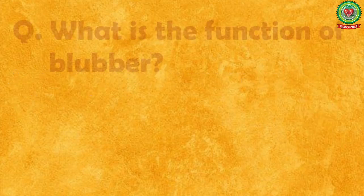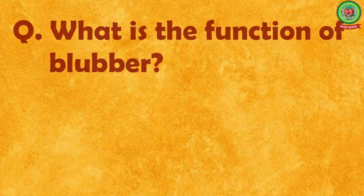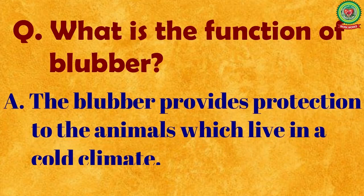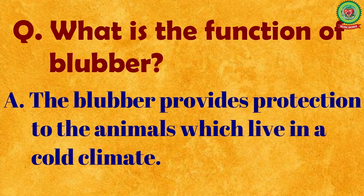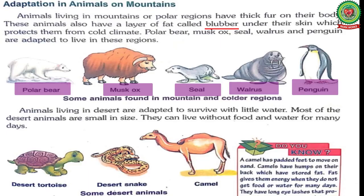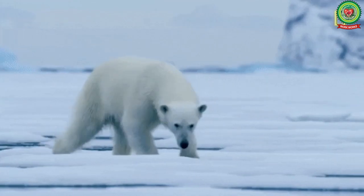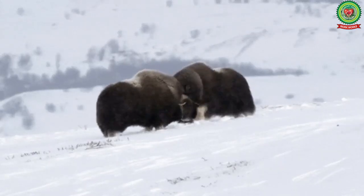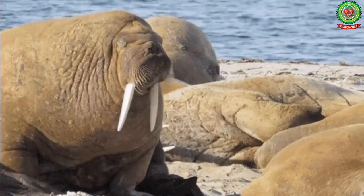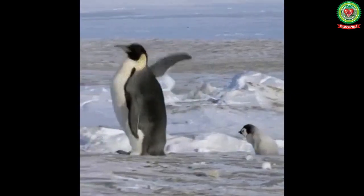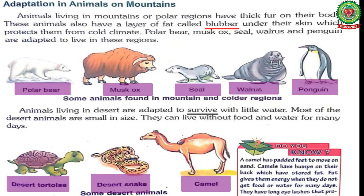The function of blubber is to provide protection to the animals which live in a cold climate. The examples of animals which live on mountains and in polar regions are polar bear, musk ox, seal, walrus, and penguin. Animals living in desert are adapted to survive with little water.